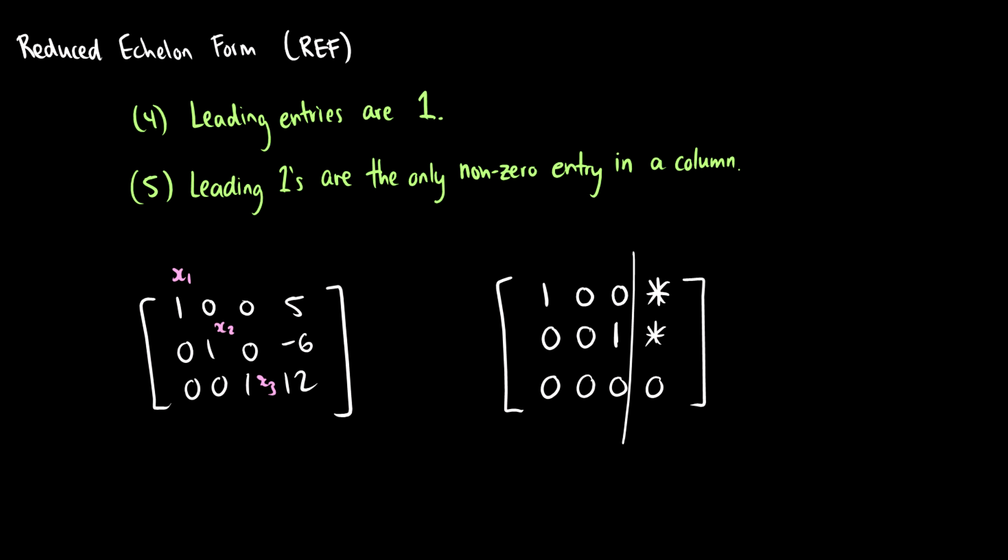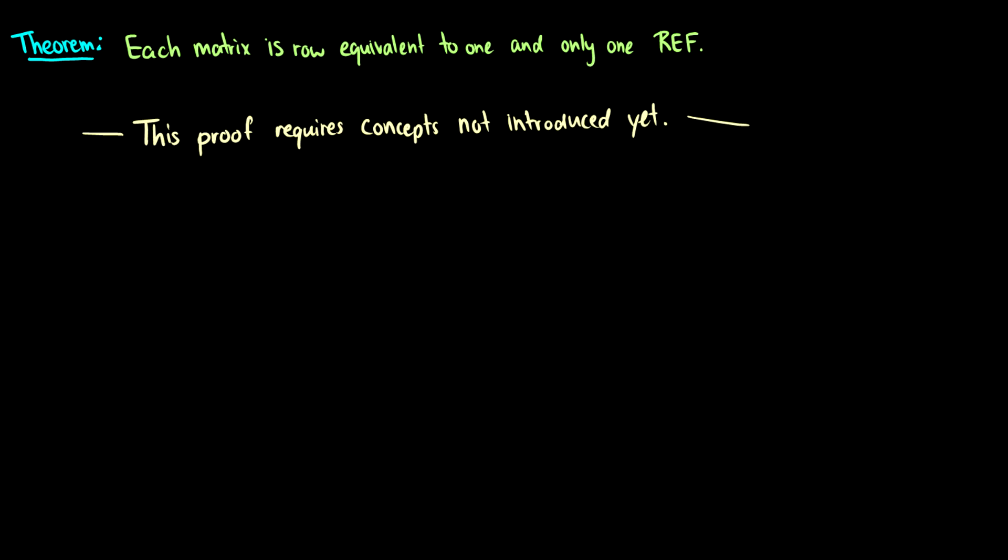So why are these useful? Well, they look nice, they're easy to solve, and there's a nice little theorem here: each matrix is row equivalent to one and only one reduced echelon form. There are concepts that haven't been introduced yet so I can't do a full proof, but here is the intuition.